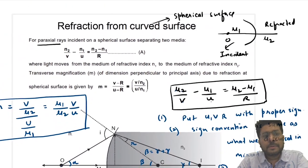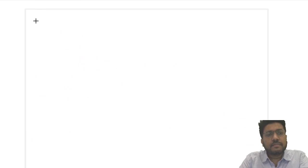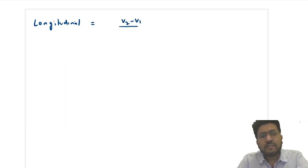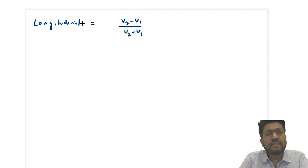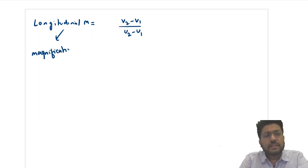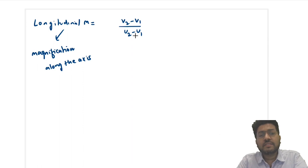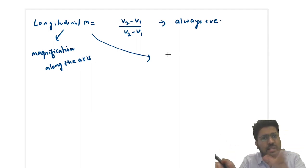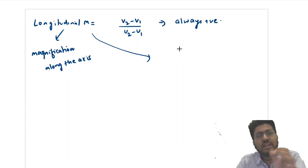This is the general formula. In this formula, put U, V, and R with proper sign; sign convention same as mirror. The formula to remember is μ₂/v − μ₁/u = (μ₂ − μ₁)/R. Now what will be the longitudinal magnification? Longitudinal magnification means magnification along the axis, which equals (V₂ − V₁)/(U₂ − U₁). This will always be positive, meaning an image is always longitudinally erect.